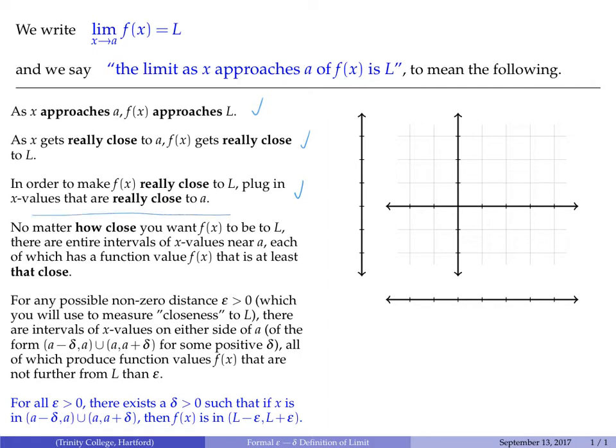But before we go on to these more precise definitions, I just want to take a minute to talk about what we mean when we say numbers are really close to a. Because that's exactly the part of this definition that's not precise. Remember, we're going to be considering limits in the context of a function of a single variable, and we're going to be considering that limit around some particular x value, a.